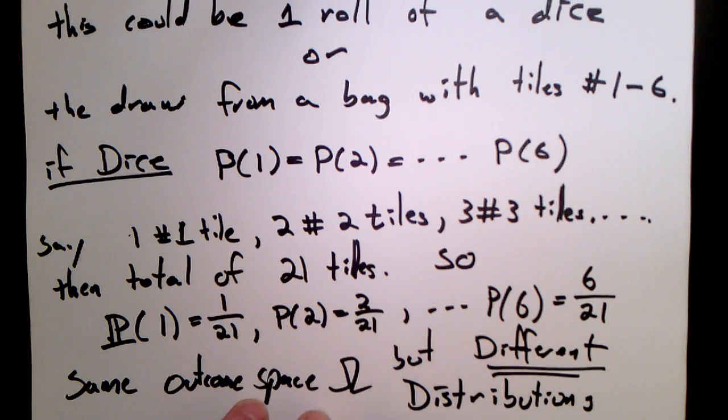The value of the probability of each of the different outcomes, that collection, is called the distribution. And we'll often talk about a certain outcome space with a certain distribution, or probabilistic distribution, or random distribution.